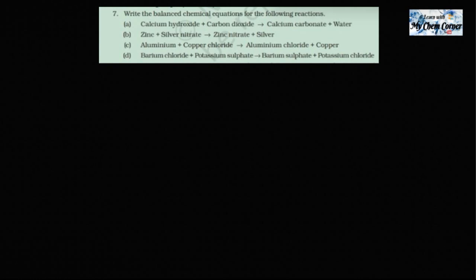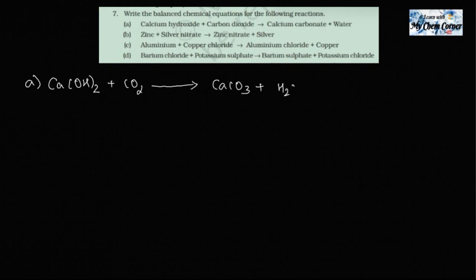The first one is calcium hydroxide — Ca(OH)₂ plus carbon dioxide — giving calcium carbonate plus water. This is a very basic reaction that you've learned in the lesson. Now you need to balance this particular reaction.